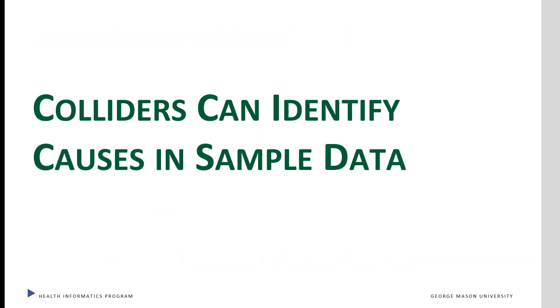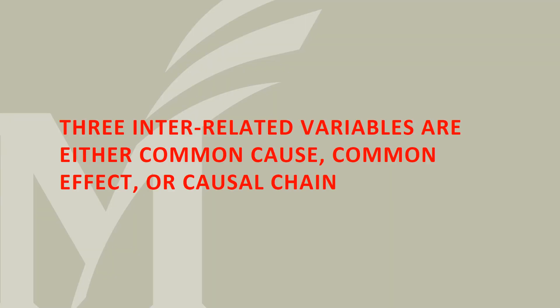Because of the switch from independence to dependence, a collider test can identify the sequence of events among the three nodes. Three interrelated variables are either a common cause, common effect, or causal chain. Each one of these has a sequence and independence assumptions related to them.